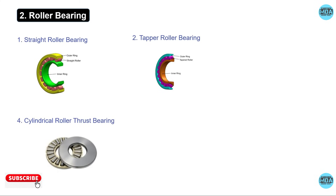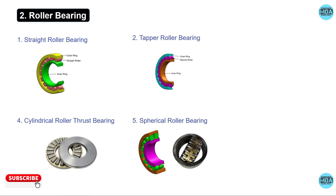The cylindrical roller thrust bearing handles only axial load. In a spherical roller bearing, the inner ring has two raceways at an angle, and they are used to handle heavy radial and axial loads.